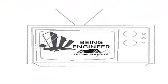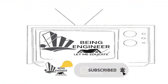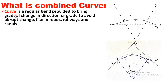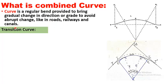First, we will define 'curve.' A curve is a regular bend provided to allow a gradual change in direction or grade, to avoid abrupt change, like in roads, railways, and canals. A combined curve is a combination of a simple circular curve and a transition curve. I have discussed these different types of curves in my previous video — please watch that video, the link of which I will give in the description, to get a better understanding.